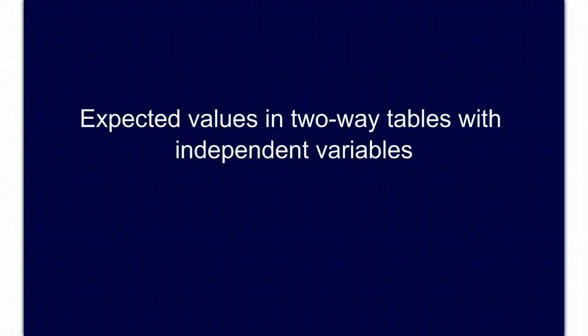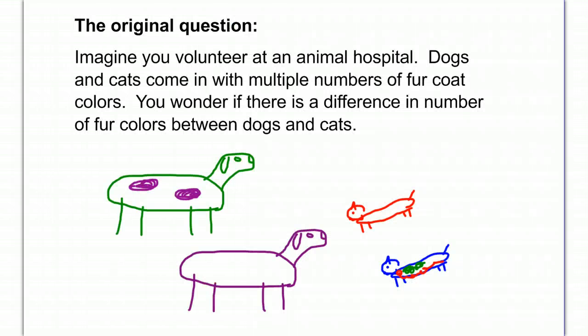We're going to look at expected values in two-way tables when you assume that variables are independent. Let's go back to the original question that we looked at in some earlier videos. Imagine you volunteer at an animal hospital. Dogs and cats come in with multiple numbers of fur coat colors. You want to know if there's a difference in the fur coat colors between dogs and cats.